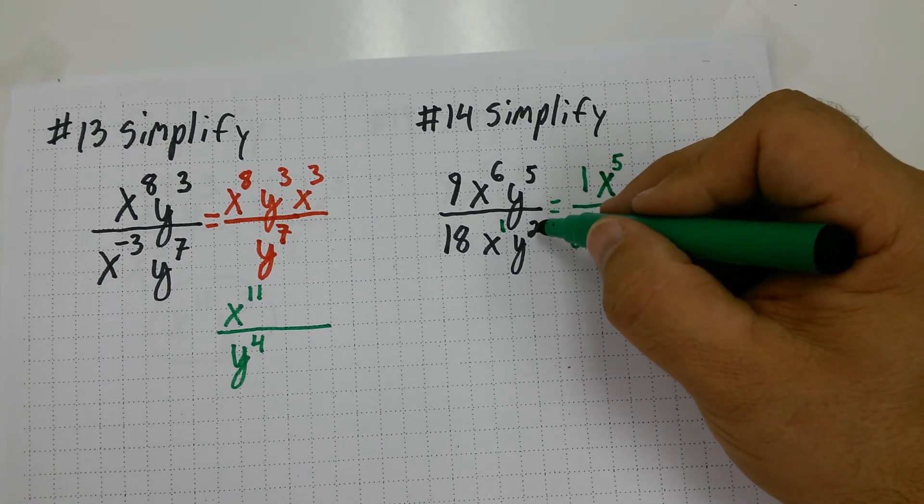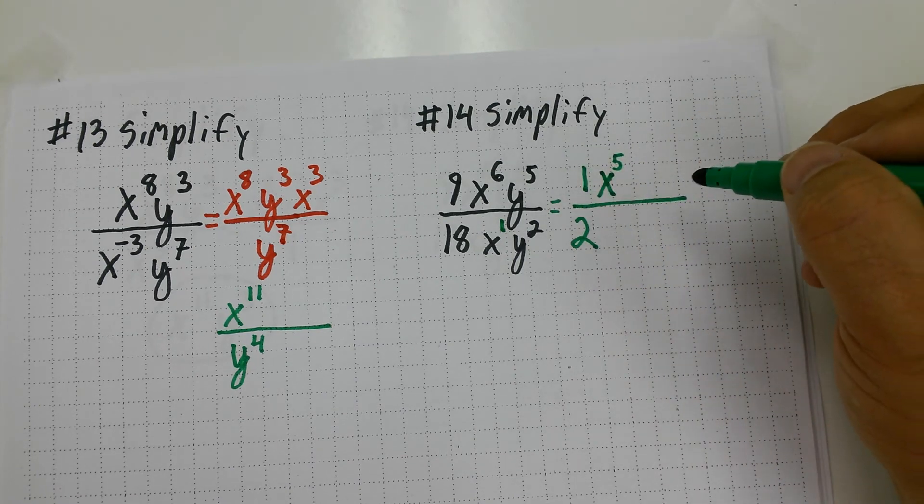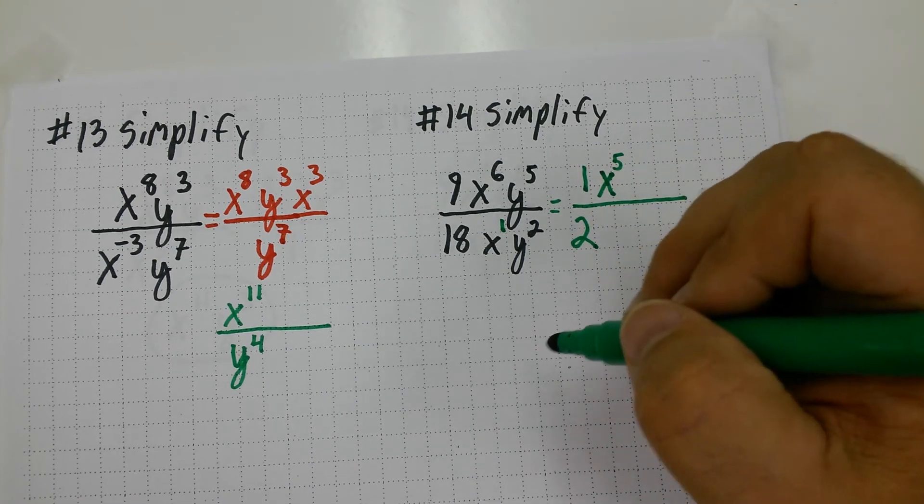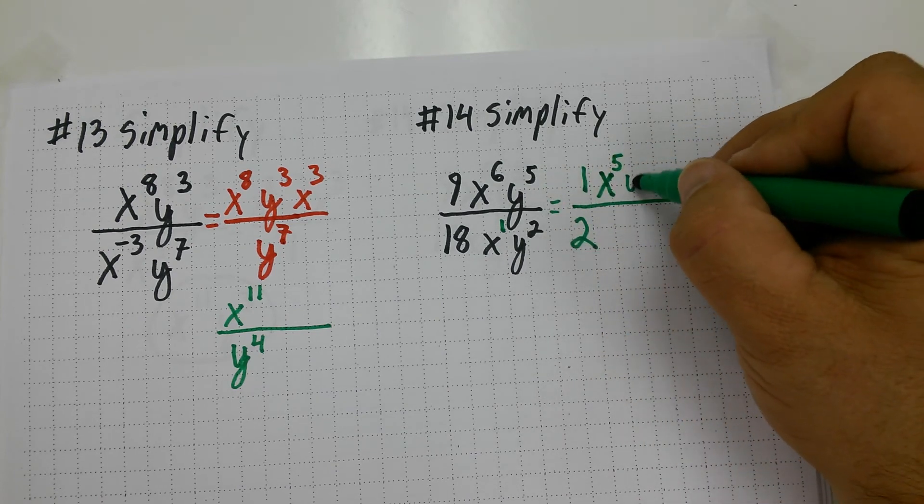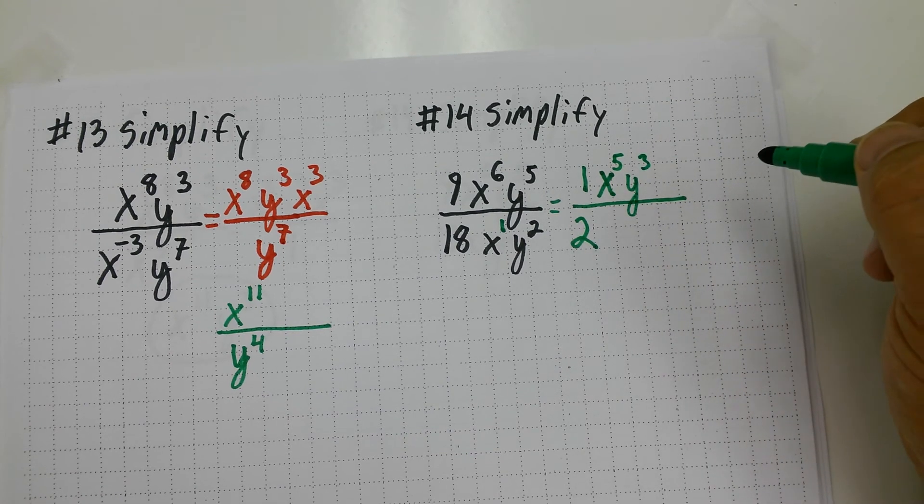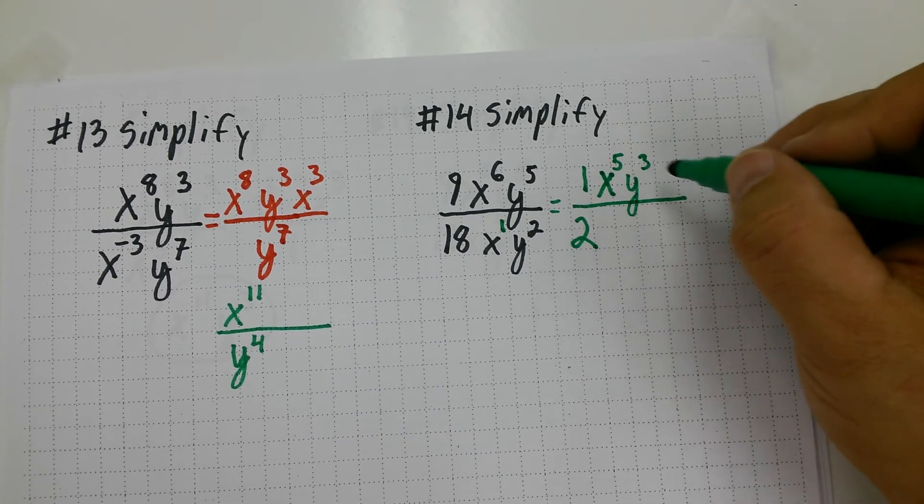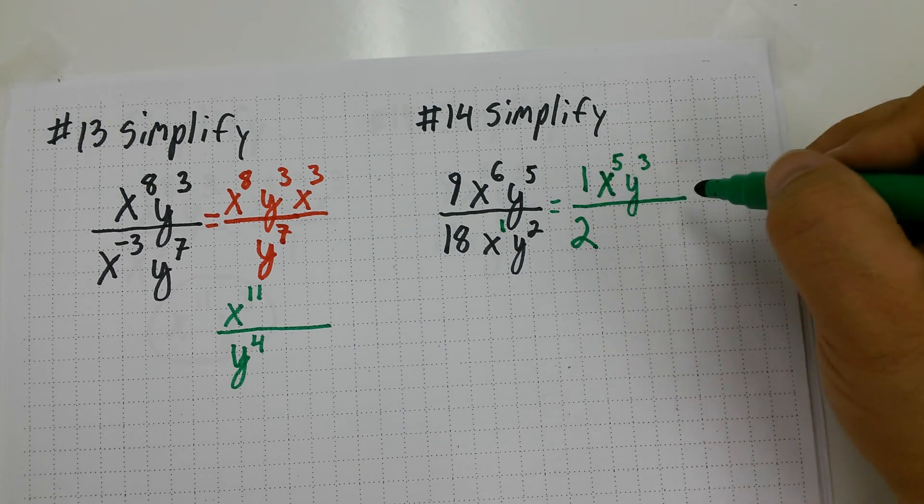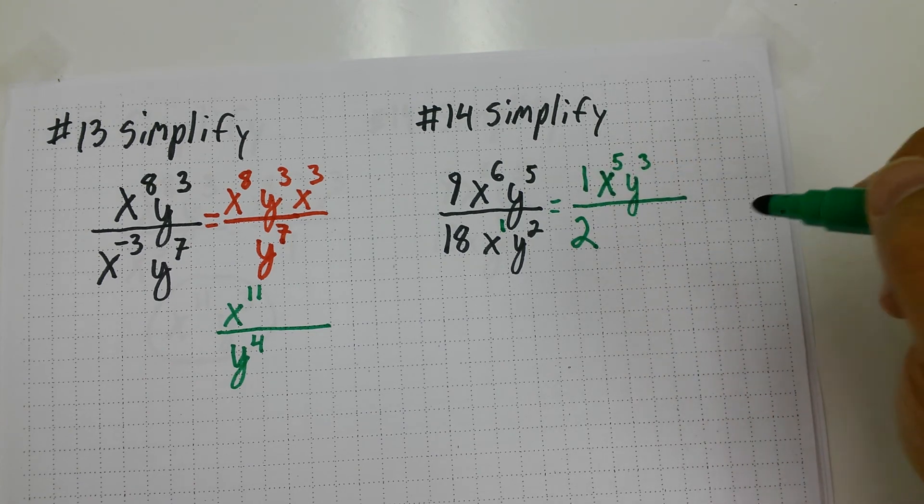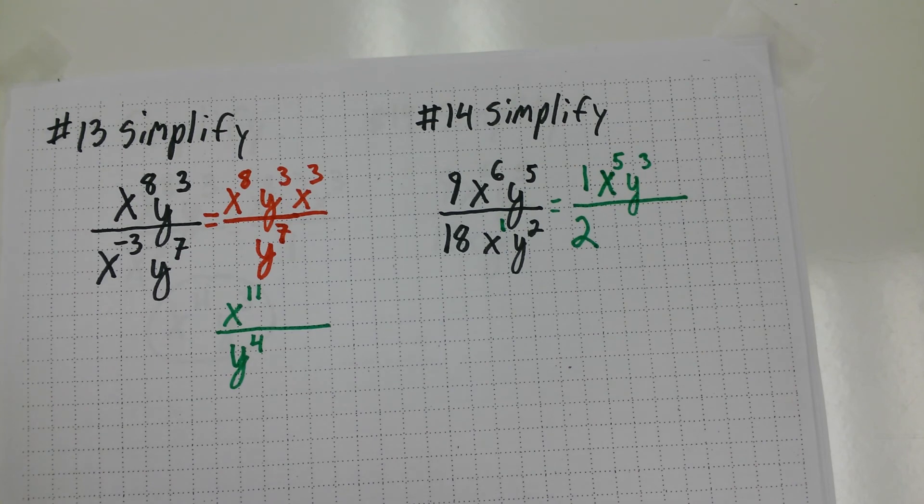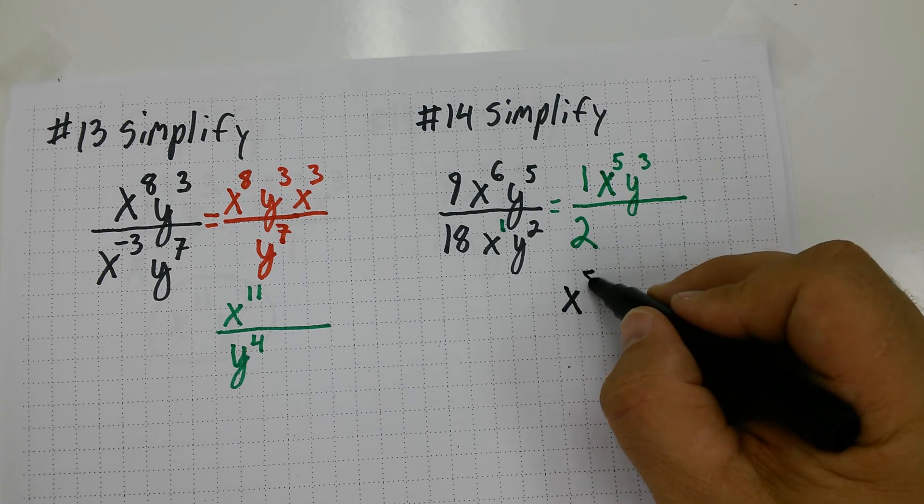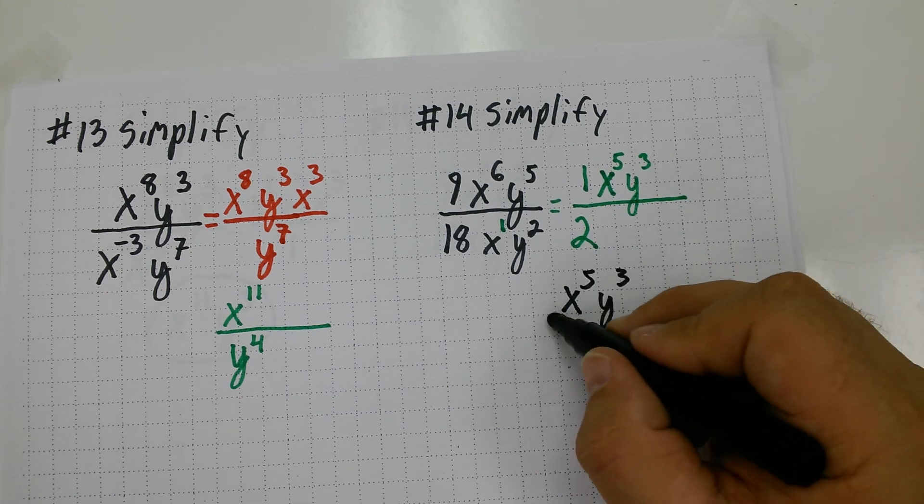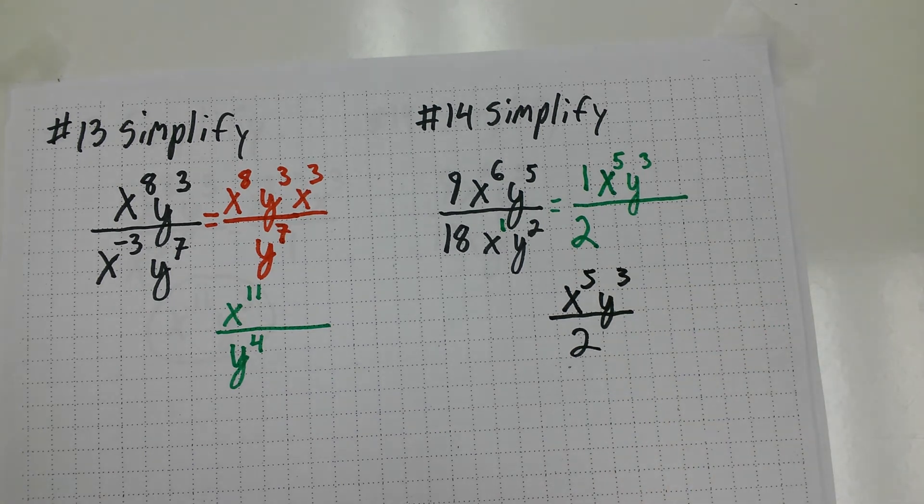Then I have y to the fifth over y to the second. I'm going to subtract. And y to the fifth is more powerful. And that's upstairs. So five minus two is going to give me y to the third on the top. Now as I look at this, I need to think about it. Are they going to have a one in my answer choice? I don't think they're going to waste the ink. So the actual answer choice from the multiple choice section would be x to the fifth, y to the third, all over two. And let's see if that matches up with any from number fourteen.